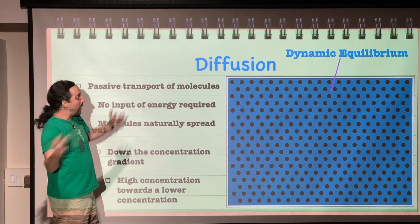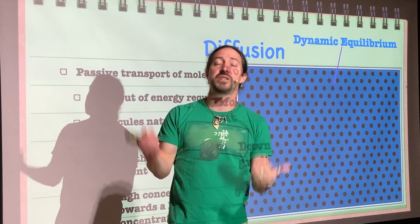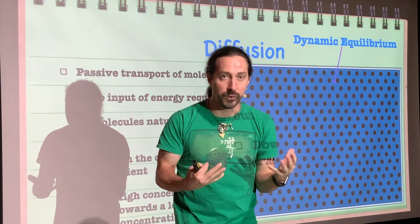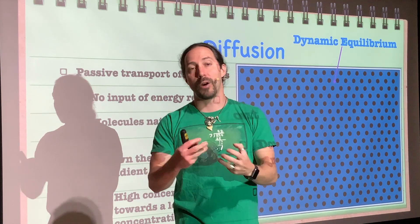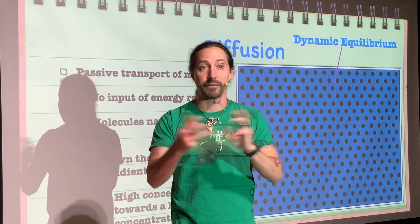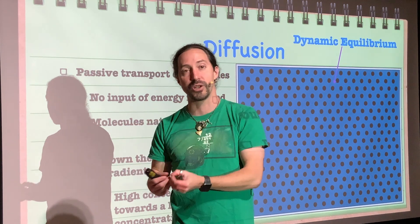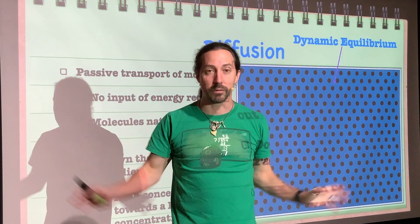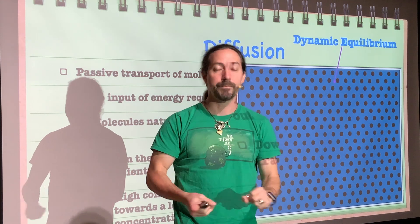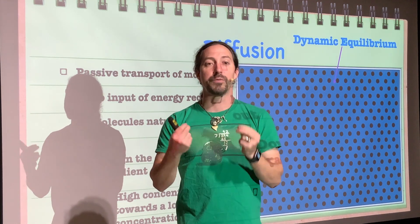Once molecules are spread out equitably, they are in what we call dynamic equilibrium. It's called dynamic because the molecules are still in motion — they won't stop moving — but they can't spread out any further. They stay at approximately the same distances from each other while still moving constantly. Dynamic motion plus equitable distribution equals dynamic equilibrium, and that is what happens with diffusion.